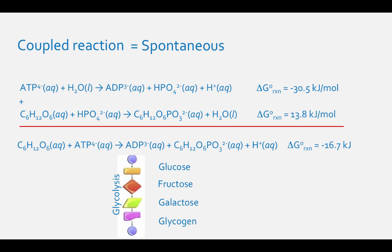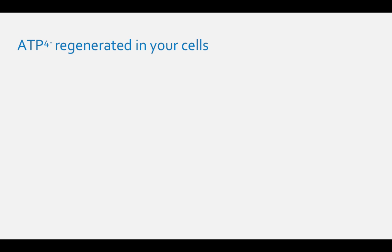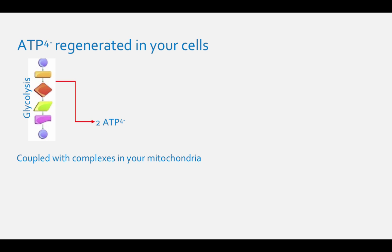ATP-4- also needs to be regenerated in your cells. The process of glycolysis only produces two ATP-4-, this is coupled with complexes in your mitochondria.